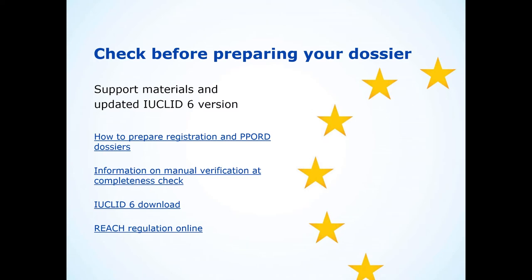First and foremost we suggest that you refer to the available support material, namely the 'How to Prepare Registration and PPORD Dossiers' manual and the document 'Information on Manual Verification at Completeness Check'. We also highly recommend you to update your IUCLID 6 to the latest version available on the ECHA website. In addition, if you do not have the physical copy of the REACH regulation, you can find it online.